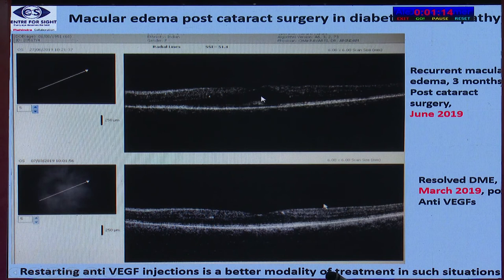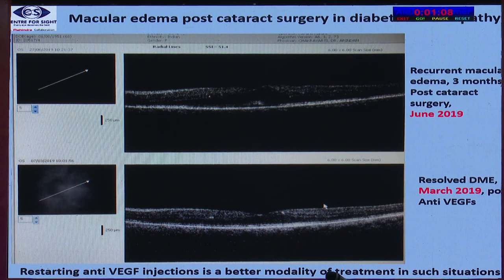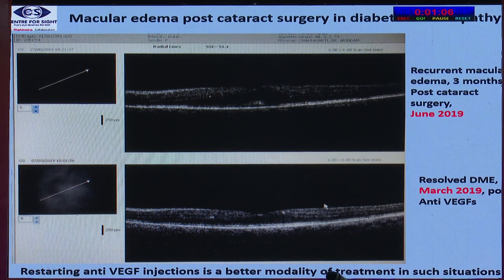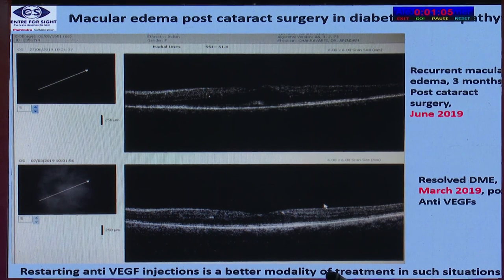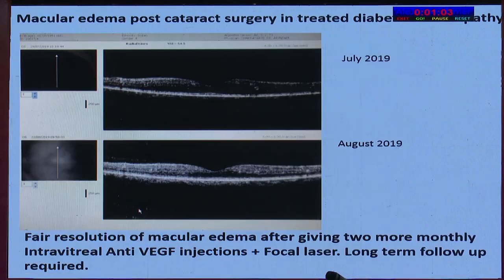This condition involves pre-existing macular edema due to diabetes — diabetic maculopathy. The best approach is to retreat with anti-VEGF injections or Ozurdex in such cases. After giving two more monthly intravitreal anti-VEGF injections with focal laser, there was fair resolution of macular edema. Long-term follow-up is required in such cases.